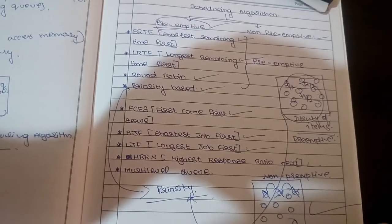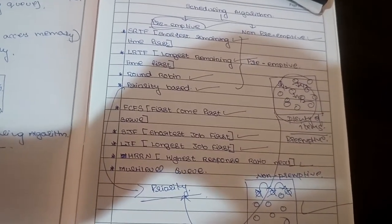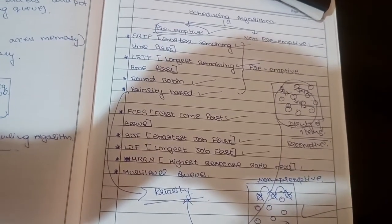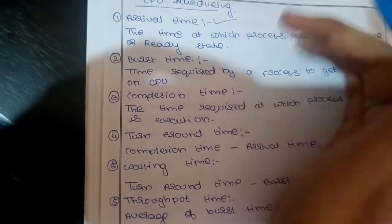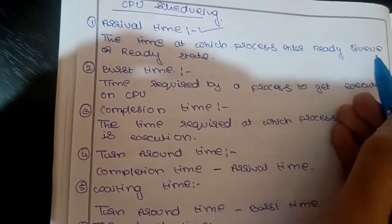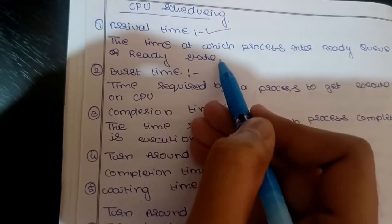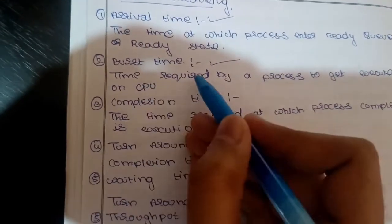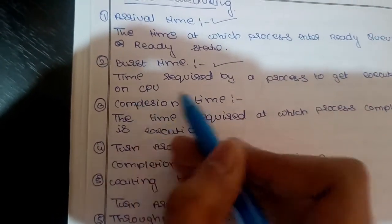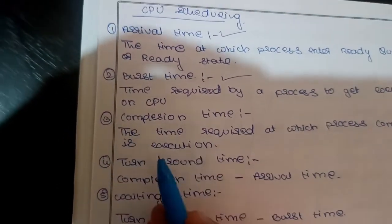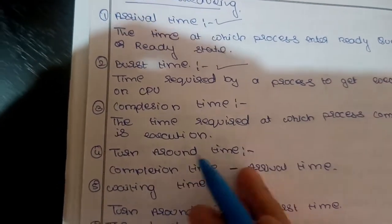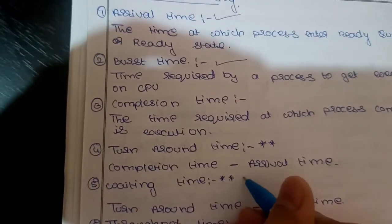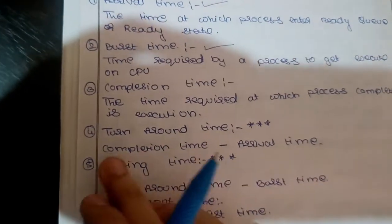It is a preemptive advantage. Next we will go for CPU scheduling methods. Under CPU scheduling we consider important time metrics: arrival time, burst time, completion time, turnaround time, and waiting time. Turnaround time and waiting time are very important in scheduling algorithm numericals, as most questions arise from these.